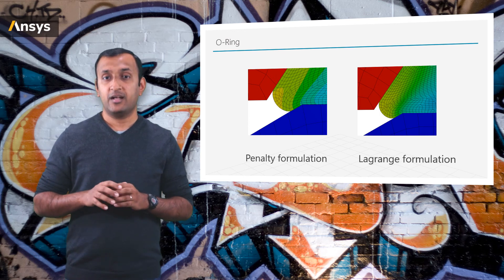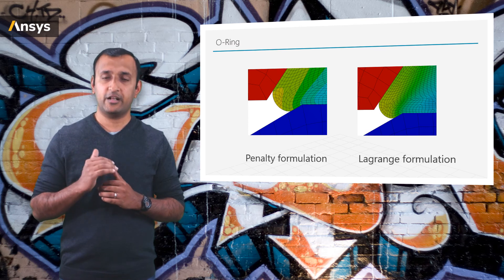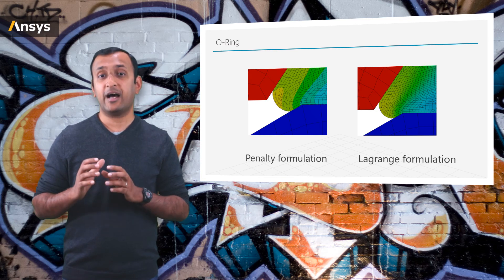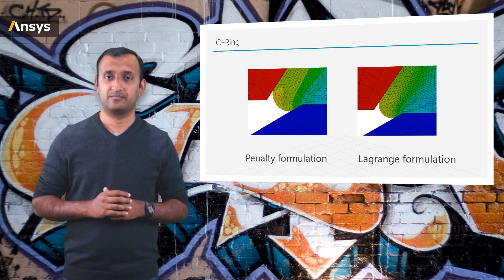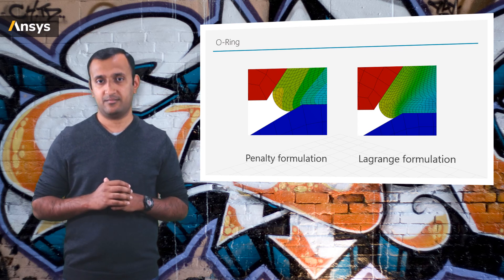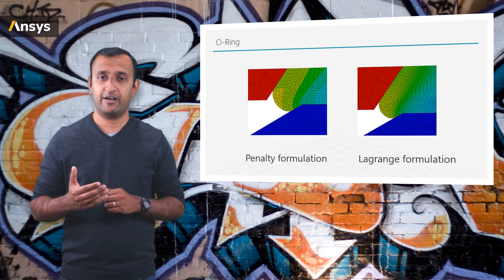In Design 2, the change in the base design introduces a sharp corner over which the material flows. As a result, the Penalty formulation would require large contact stiffness to avoid penetration. A Lagrange formulation, on the other hand, imposes a zero penetration constraint, so it captures the flow of material over the sharp corner more accurately. This simple example shows when one formulation may be beneficial over another depending on the design or application.